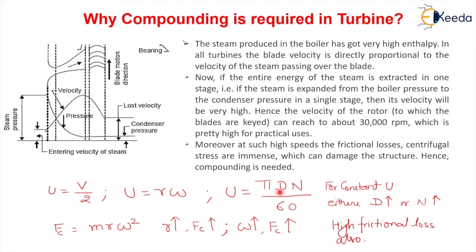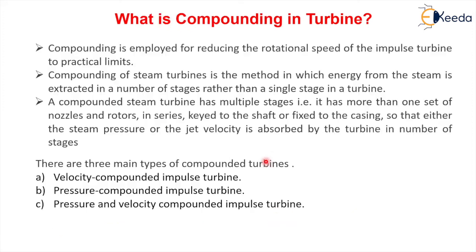We cannot increase the diameter due to space constraints, so we must increase N. But centrifugal force Fc = mrω, and as N increases, ω increases, so Fc increases. In the simple impulse turbine there will be very high centrifugal stress. Since velocity of steam is very high on the turbine blades, frictional loss will also be very high. Because of these conditions it can damage the structure of the steam turbine — hence compounding is needed.